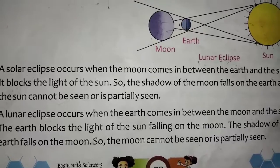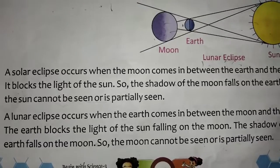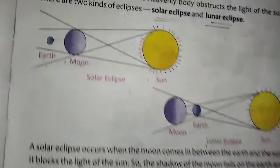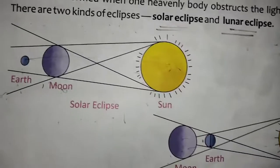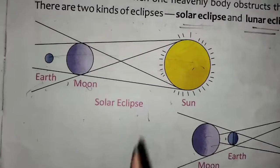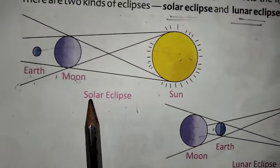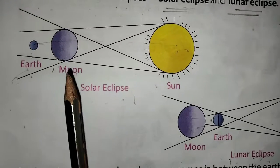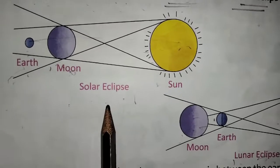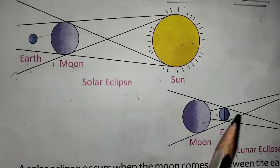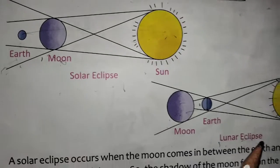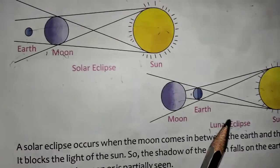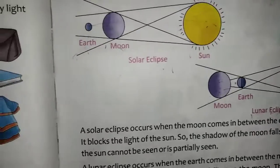I hope you understood what is meant by lunar eclipse and solar eclipse. If you know the diagram, you can understand perfectly. Solar eclipse means the moon comes in between the earth and the sun. Lunar eclipse means the earth comes in between the sun and the moon.